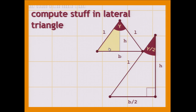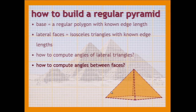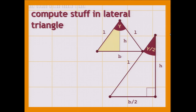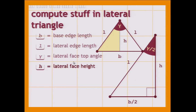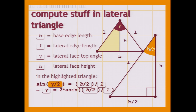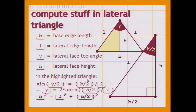We'll take the lateral triangle — what you see here in orange. B is the base edge length, L is the lateral edge length, gamma is the top angle for the lateral face, and H is the height for the lateral face. Then we take this right triangle here and see it bigger. In this triangle, we have that sine of (gamma/2) is (B/2) over L. And we can get the top angle from here, and we can also get the height. Again, it all reduces to those four formulas.